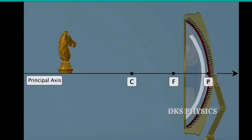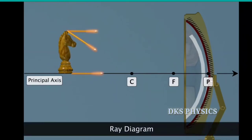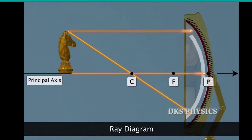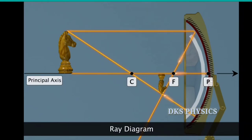Ray diagrams can be used to determine the position and characteristics of the image formed. For this, we need to know the sign conventions for reflection by spherical mirrors — the new Cartesian sign convention — and the standard rays used for drawing ray diagrams.